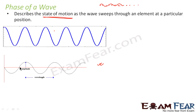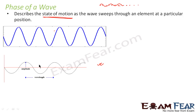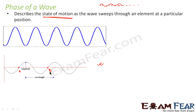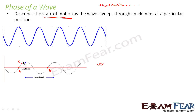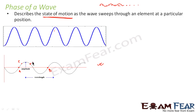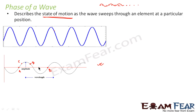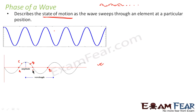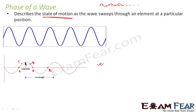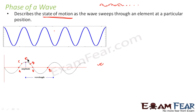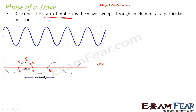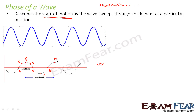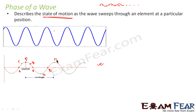In this wave, let me consider certain points. Let us suppose I consider this as point A, this point as B, this point as C, this point as D, again this point as E, this is F, this is G, and this is H. We have plotted so many different points on this wave.